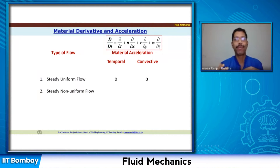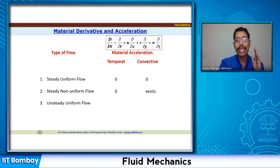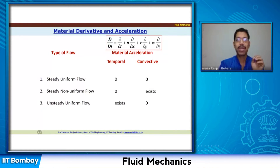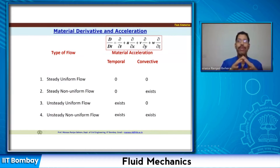For a steady non-uniform flow, the moment you say steady, temporal acceleration is zero, but since the flow is non-uniform, convective acceleration is going to exist. Similarly, for an unsteady uniform flow, temporal acceleration remains but convective acceleration is zero. For an unsteady non-uniform flow, both accelerations remain, and the total acceleration is derived considering both components.